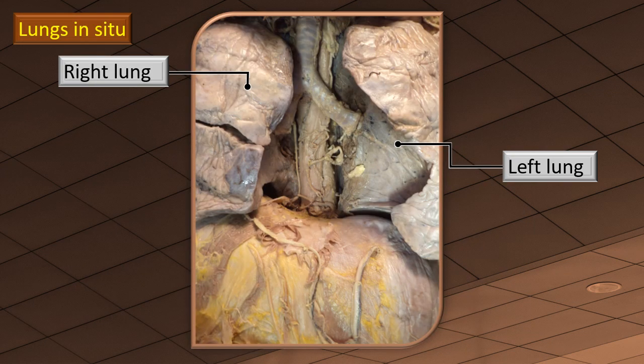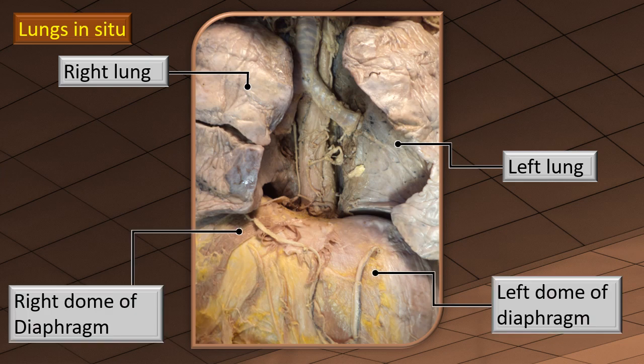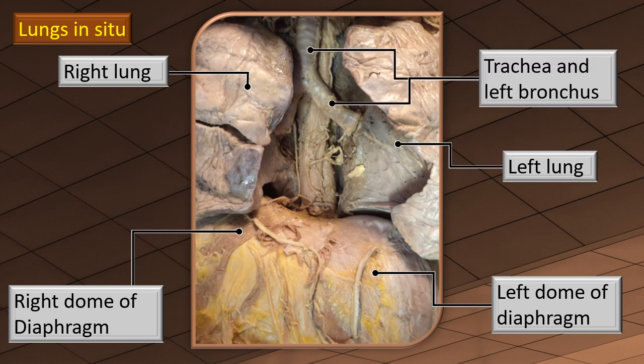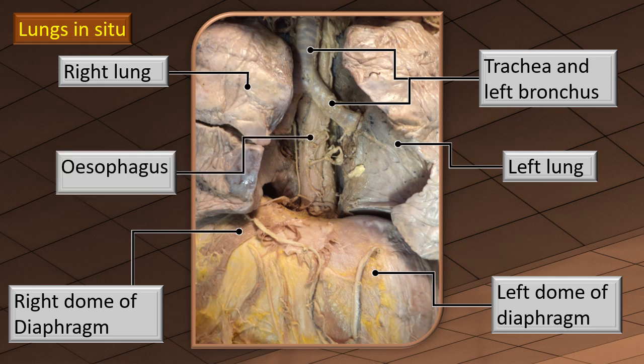This next photograph is the same as the previous one, except that the heart has been removed to show more details of the immediate surroundings of the lung. You can see the right lung and the left lung. Since the heart has been removed, the right and left domes of the diaphragm are now visible. Immediately behind where the heart was, you can see the trachea and the left bronchus — a small bit of the right bronchus is also visible. Going down the posterior mediastinum, you can see the esophagus.